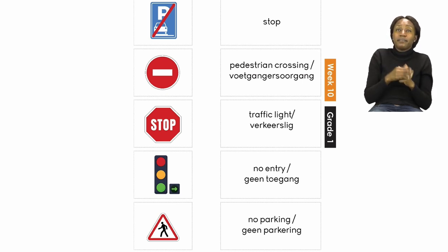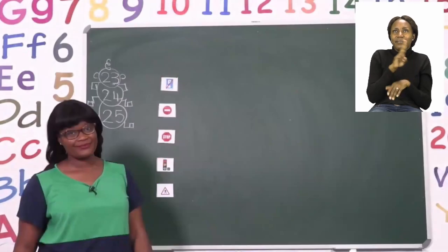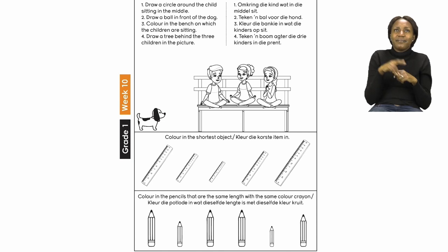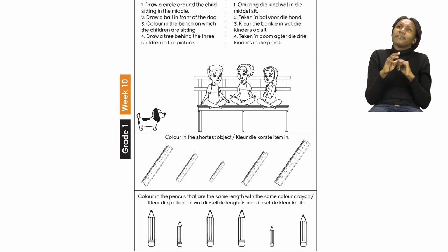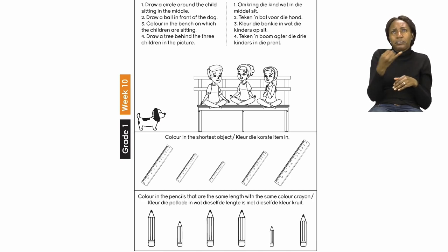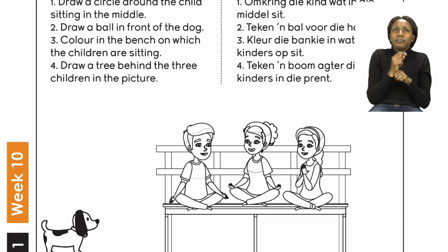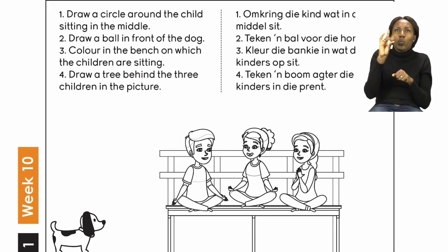When you are done with this exercise, boys and girls, which I am sure will not take you too much time, I would like you to please join me on the next page — page 24. On page 24 we are going to be following a set of instructions to do or draw. We are going to start by looking at our picture, which has a dog or puppy and three people sitting on a bench.